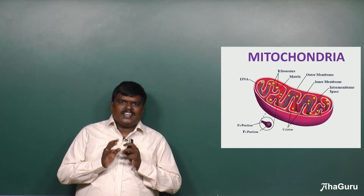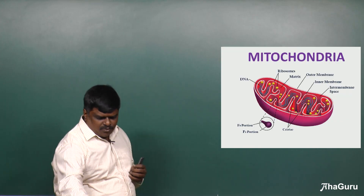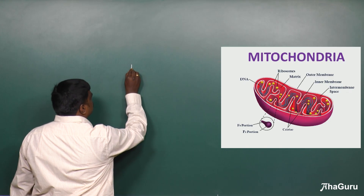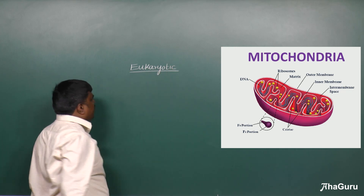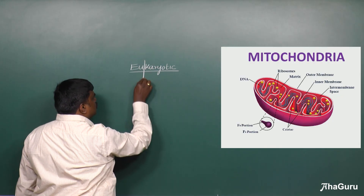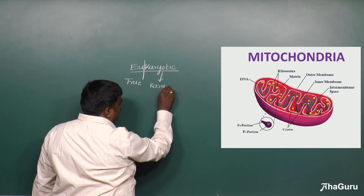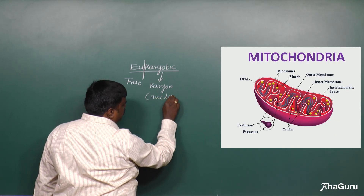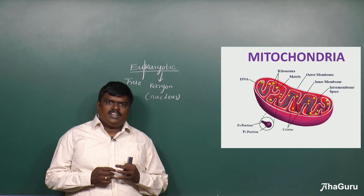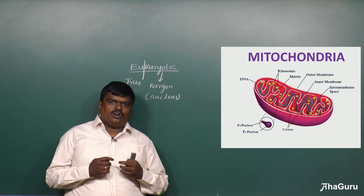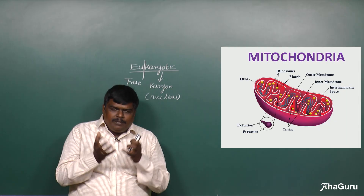Mitochondria is a cell organelle present in all eukaryotic organisms. The term 'eukaryotic' is derived from a Greek word — 'karyon' means nucleus. So mitochondria, which is an important cell organelle, is present in eukaryotic cells and eukaryotic organisms.